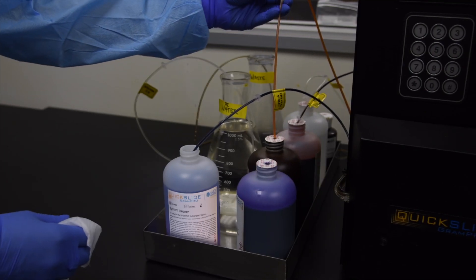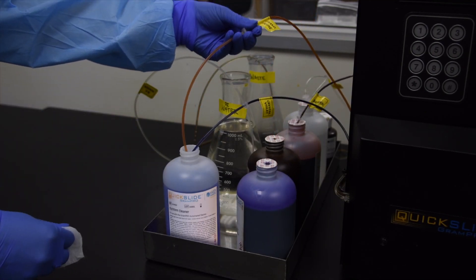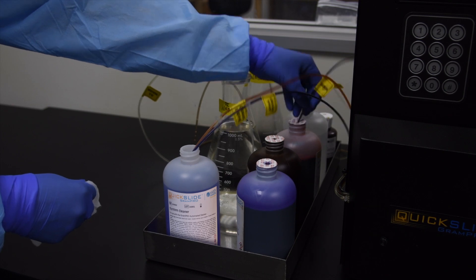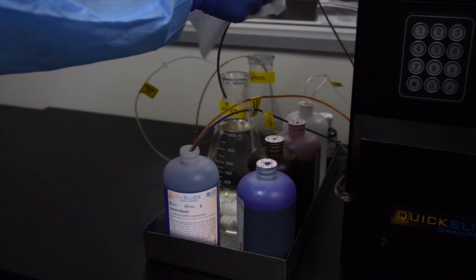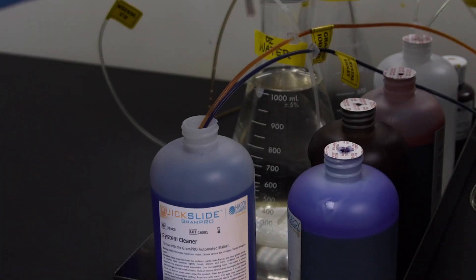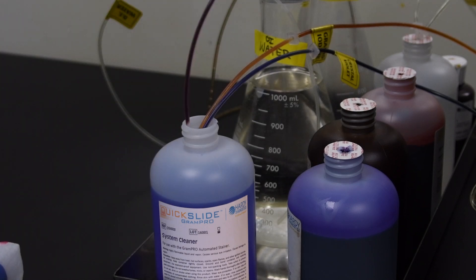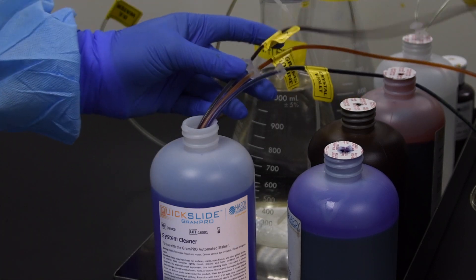When running a scrub cycle, remove the reagent lines from their stain containers and wipe off the residual reagents from the ends of the cannulas. For a scrub cycle, place all reagent cannulas into one bottle of system cleaner.